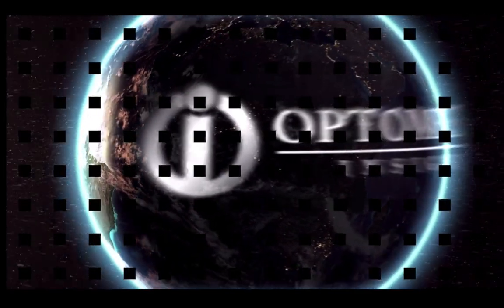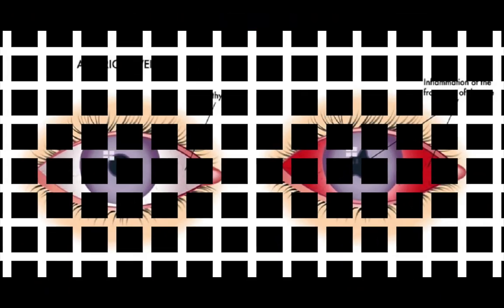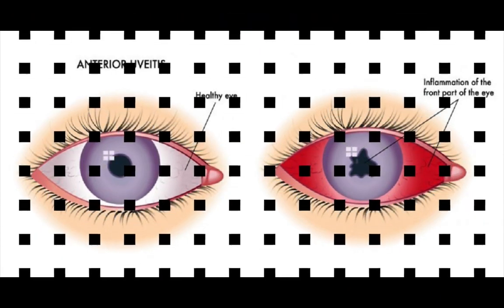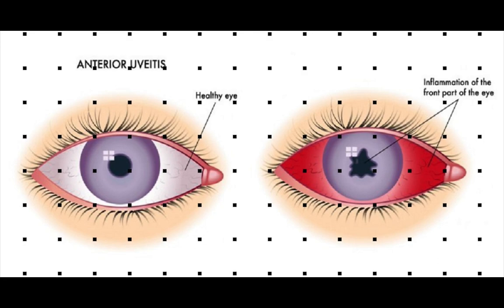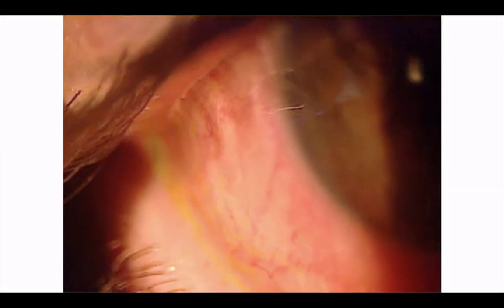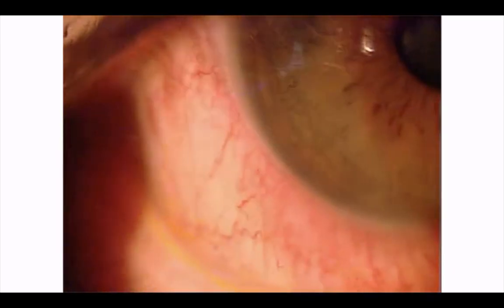Anterior uveitis is a potentially devastating condition with significant potential clinical sequelae. Patients typically present with complaints of a sore eye and light sensitivity. They normally have diffuse bulbar hyperemia with the injection being greatest in the limbal region.